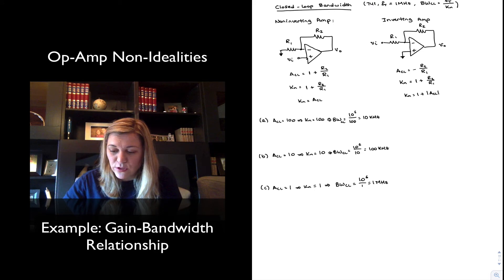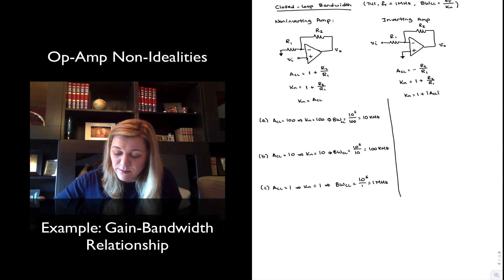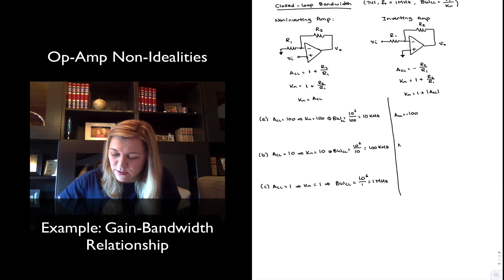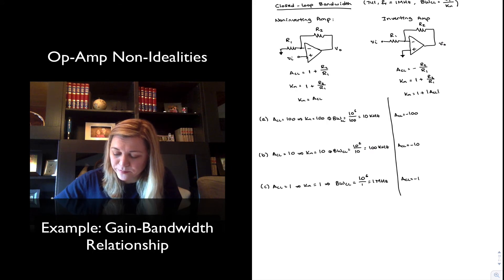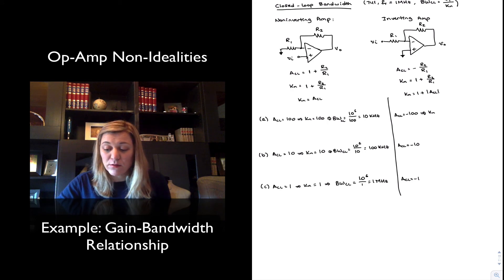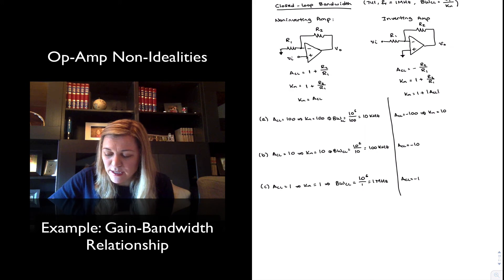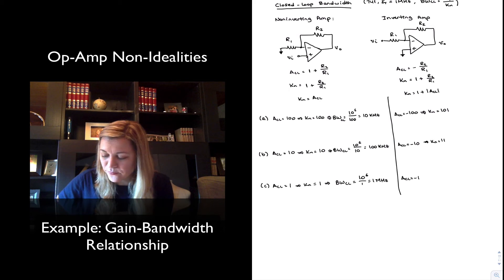Now let's look at the inverting amplifier with the same three scenarios. Scenario A has a closed-loop gain of negative 100, scenario B is negative 10, and scenario C is negative 1. The noise gain is always 1 plus R2 over R1, or 1 plus the absolute value of ACL, so the noise gains are 101, 11, and 2 respectively.